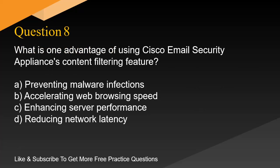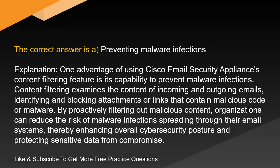Question 8. What is one advantage of using Cisco Email Security Appliance's content filtering feature? A. Preventing malware infections. B. Accelerating web browsing speed. C. Enhancing server performance. D. Reducing network latency. The correct answer is A. Preventing malware infections. Content filtering examines the content of incoming and outgoing emails, identifying and blocking attachments or links that contain malicious code or malware. By proactively filtering out malicious content, organizations can reduce the risk of malware infections spreading through their email systems, thereby enhancing overall cybersecurity posture.